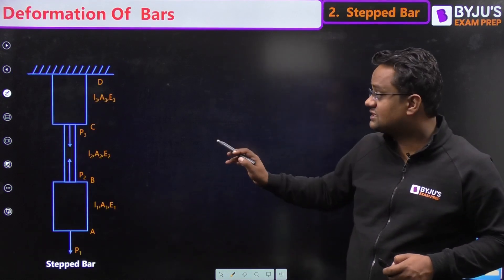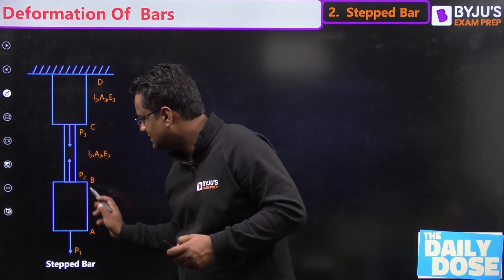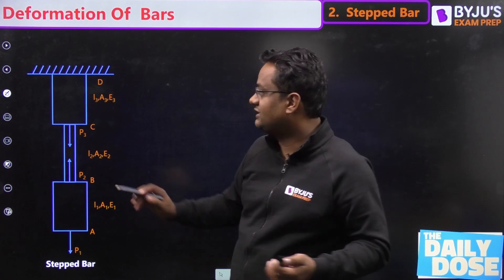Now suppose this is a stepped bar. Here area is something else, here is something else, here is something else. Now how to find the deformation?